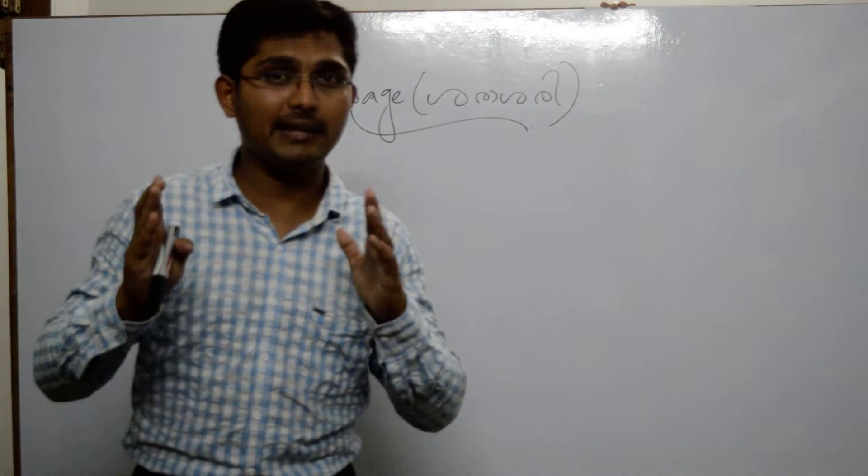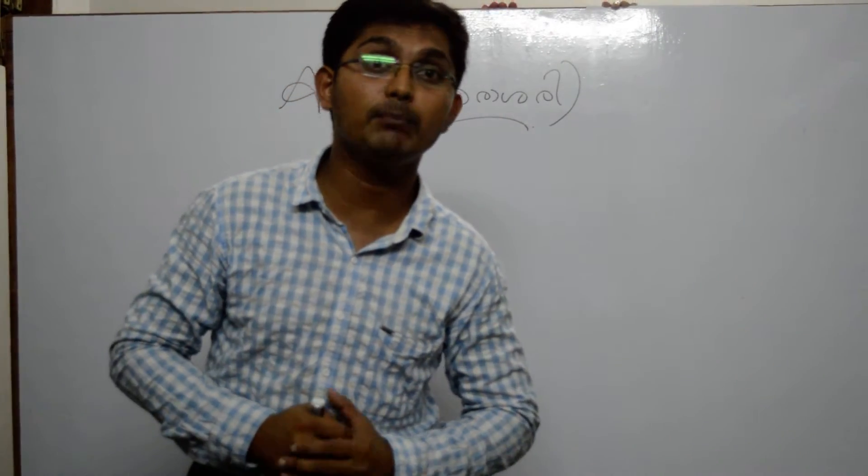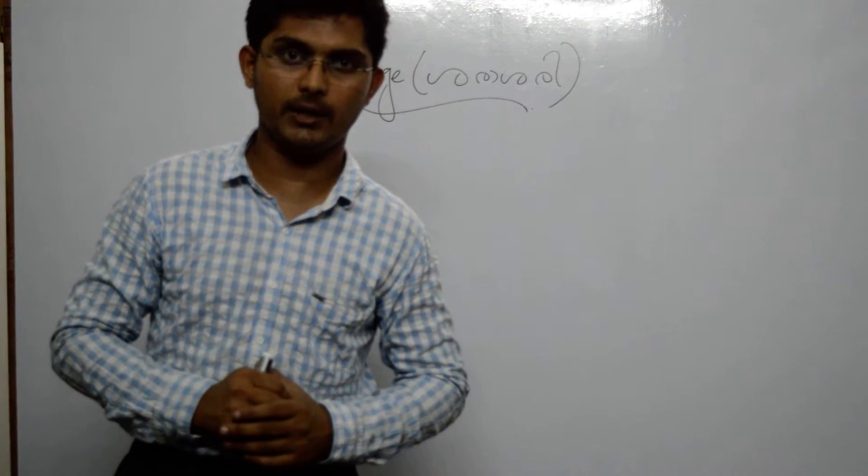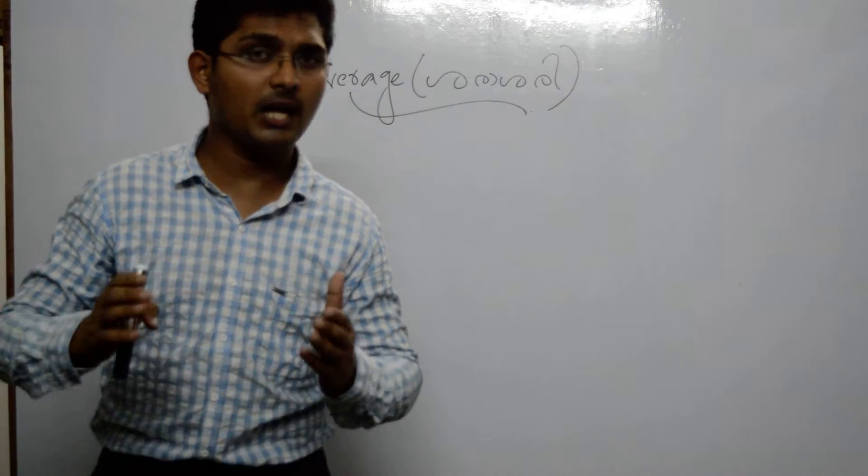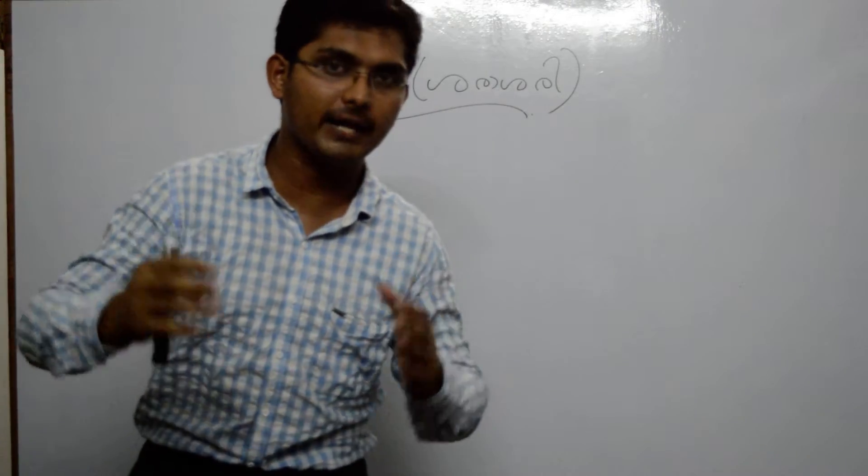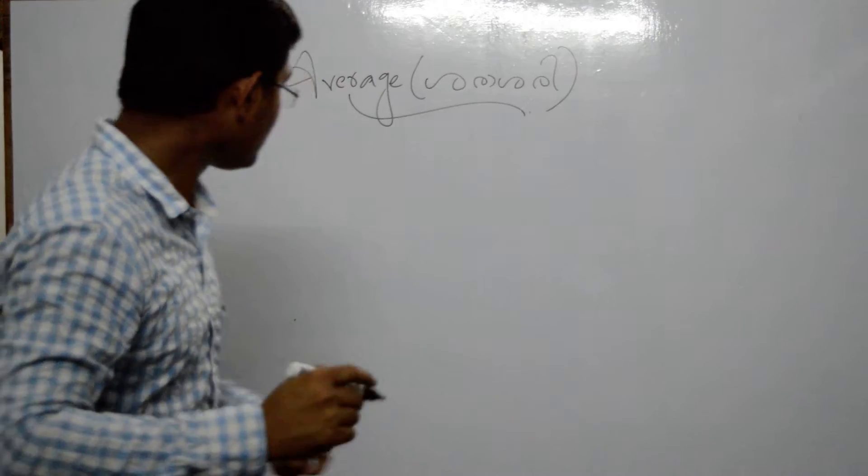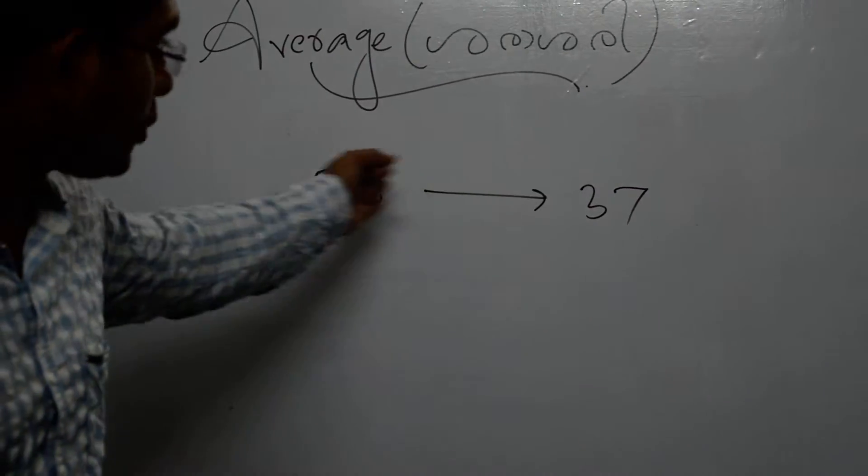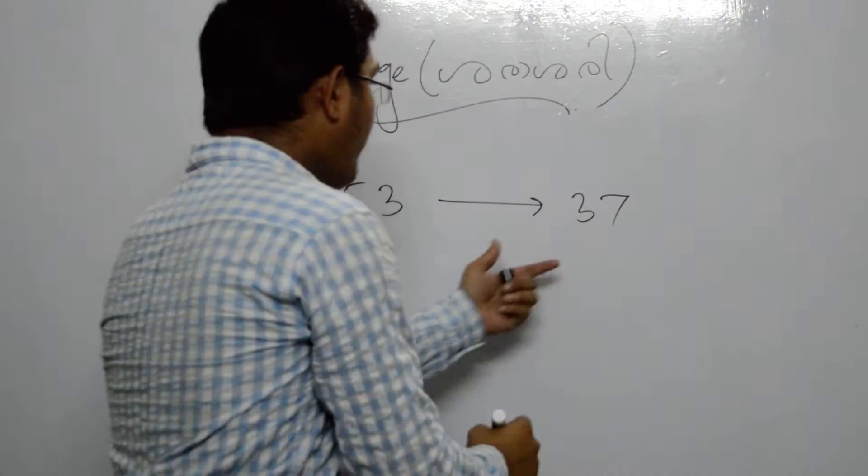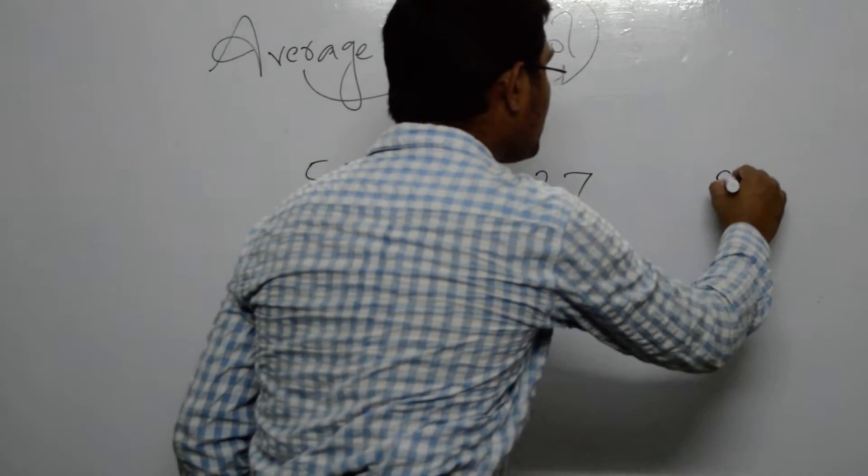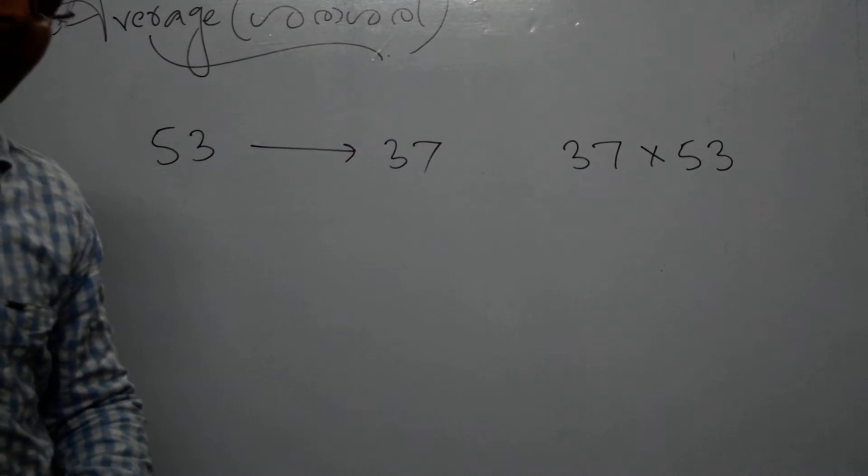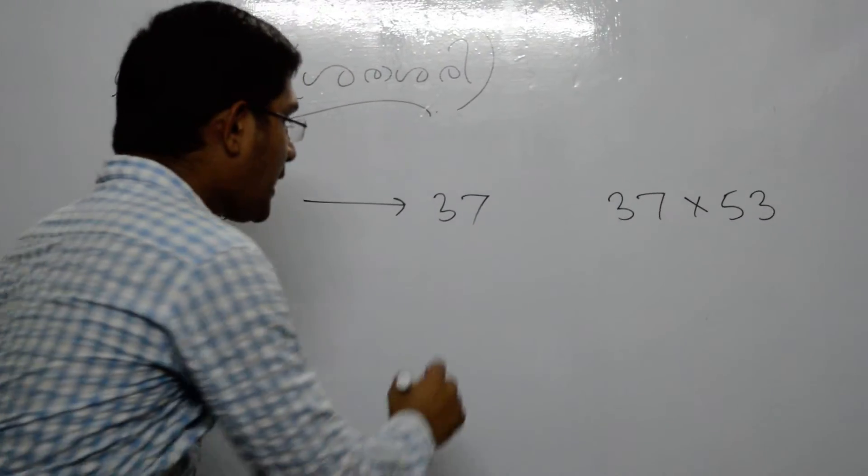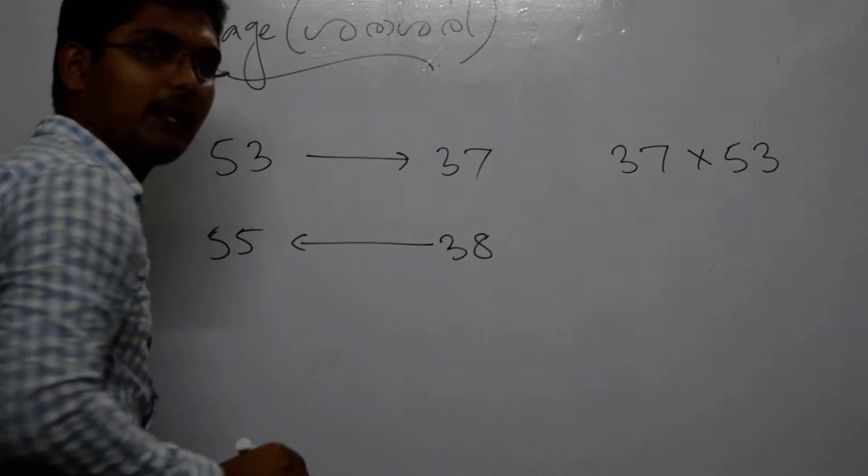In this class, 37 students have an average of 53 kg. When we add one more student, we have 38 students total, and now the average becomes 55 kg.